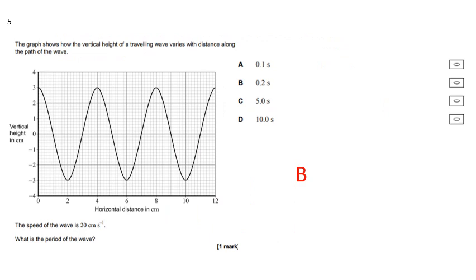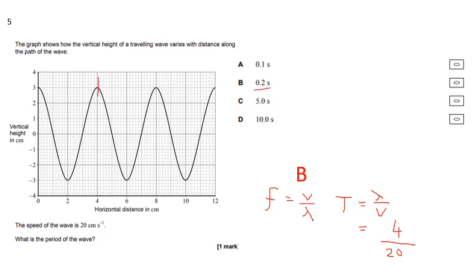The graph shows the vertical height of a wave travelling distance along the path of the wave. What is the period of the wave? The period is one over the frequency. Using F = V / lambda, the period = lambda / V. From the graph, the wavelength is 4 centimetres, and the velocity of the wave is 20, so the period will be 1 over 5, which is 0.2. A good example of a question where they give you information you don't need — which is the amplitude. The answer is B.